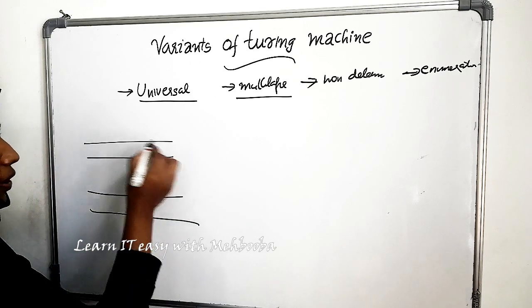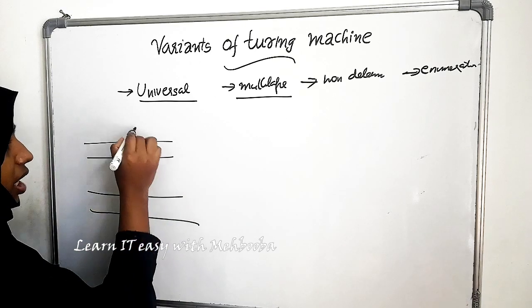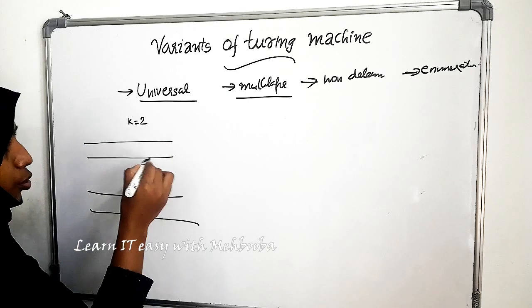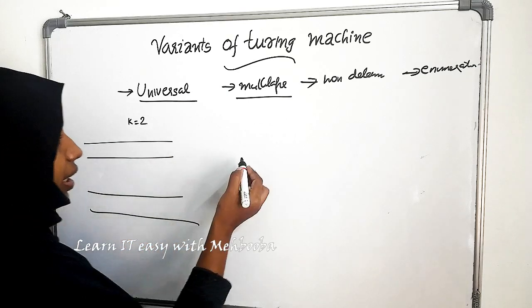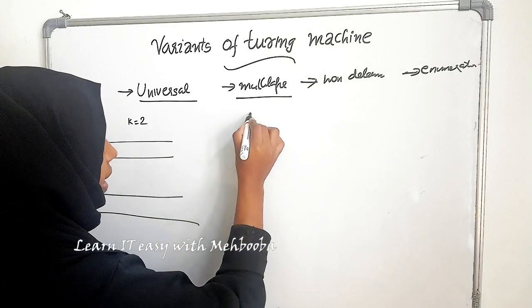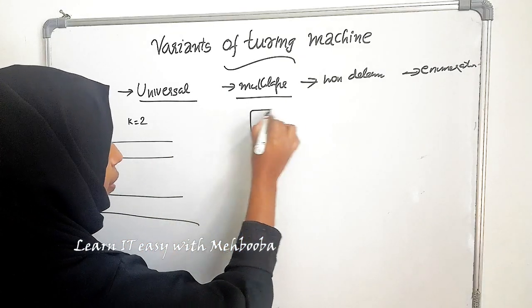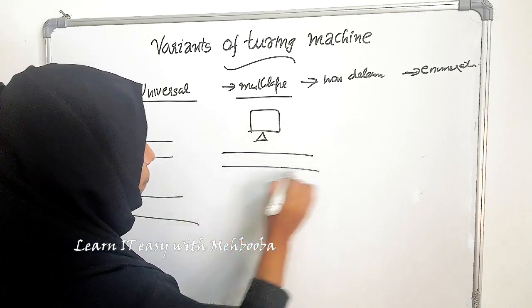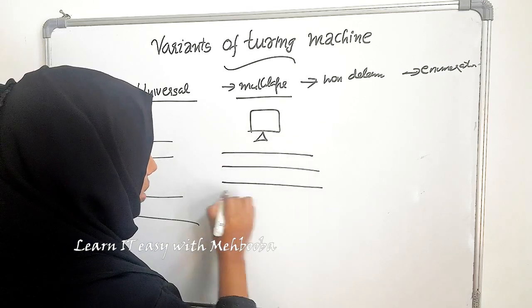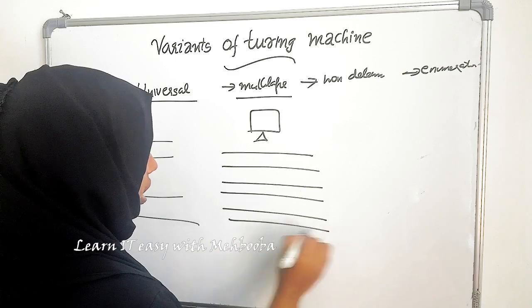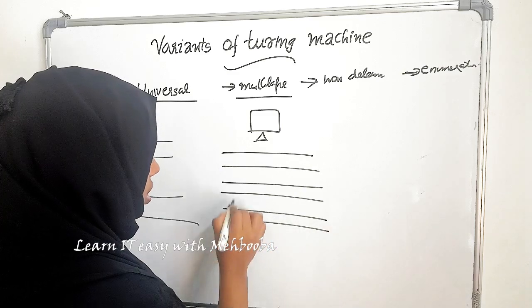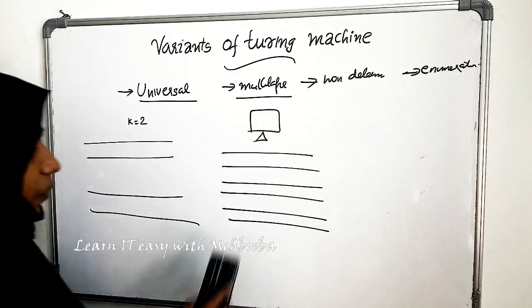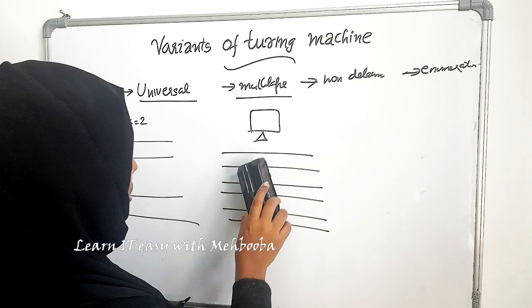For example, if a Turing machine is having K tapes — let's take K as 2 — we can create a single-tape Turing machine with 2K tracks. So this is a single-tape with 2K tracks.